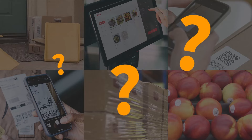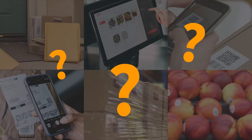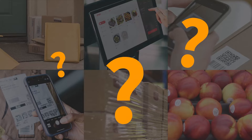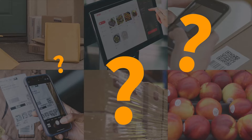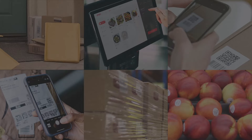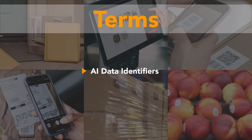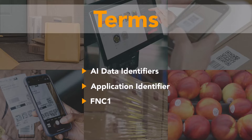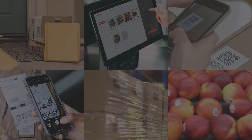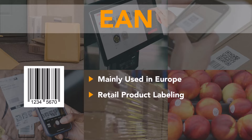Confusing? This video provides you with a fundamental overview and explains terms like AI Data Identifiers, Application Identifier, or FNC1. The choice of a barcode type depends on the application area.